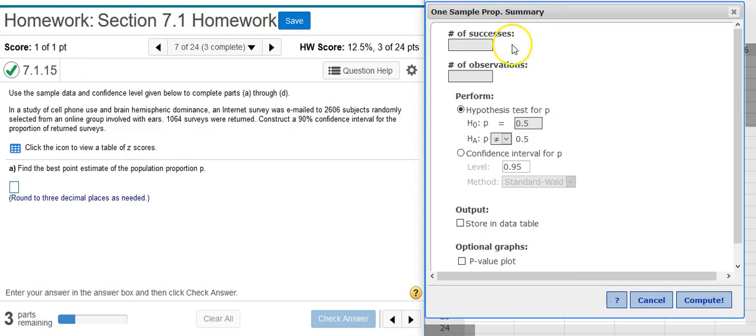The number of successes is defined by how many successes we have, where success is determined by the confidence interval. Here we want a confidence interval on the proportion of returned surveys. That means returning a survey is the definition of success. 1,064 surveys were returned.